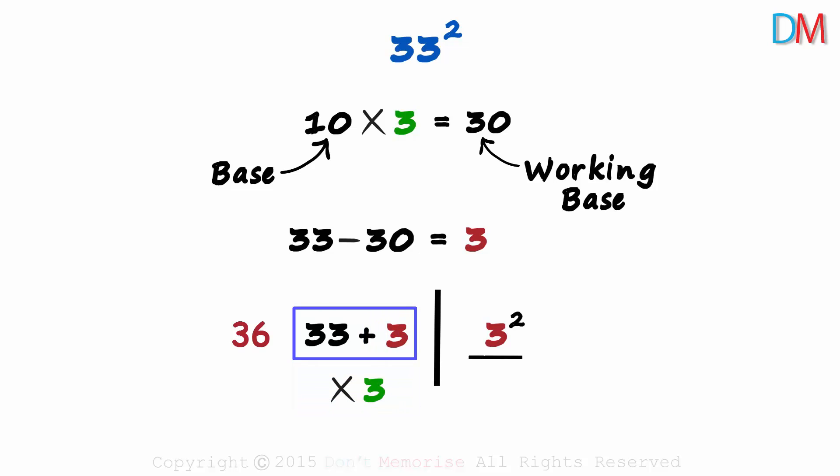33 plus 3 is 36, and 36 times 3 is 108. And 3 squared is 9. 33 squared is 1089.